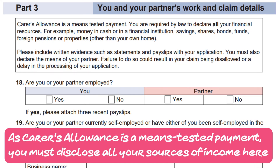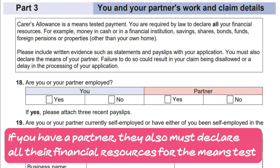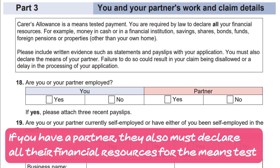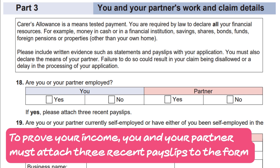Step 3: As Carers Allowance is a means-tested payment, you must disclose all your sources of income. If you have a partner, they must also declare all of their financial resources for the means test. To prove your income, you and your partner must attach three recent payslips to the form.